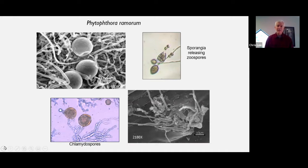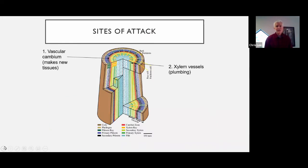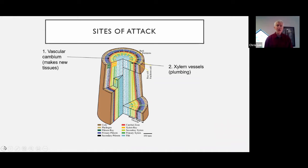They like moisture and they like nice mild temperatures to grow. So when those conditions are right, the pathogen does very well. When Phytophthora remorum attacks oak and tan oak trees, it does so in a couple of possible different ways, and that can manifest itself differently in different host plants. One of the ways that it attacks some plants is by attacking the vascular cambium — that's the red zone in this picture — which is the part of the tree that's under the bark and produces the tissues that conduct water and nutrients from the leaves down through the rest of the plant.